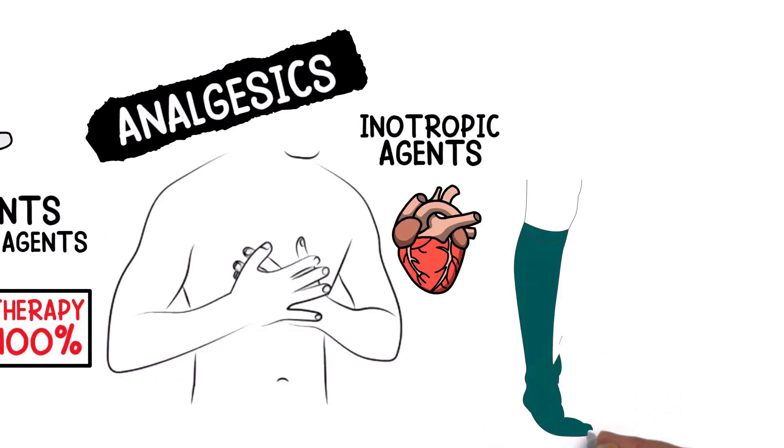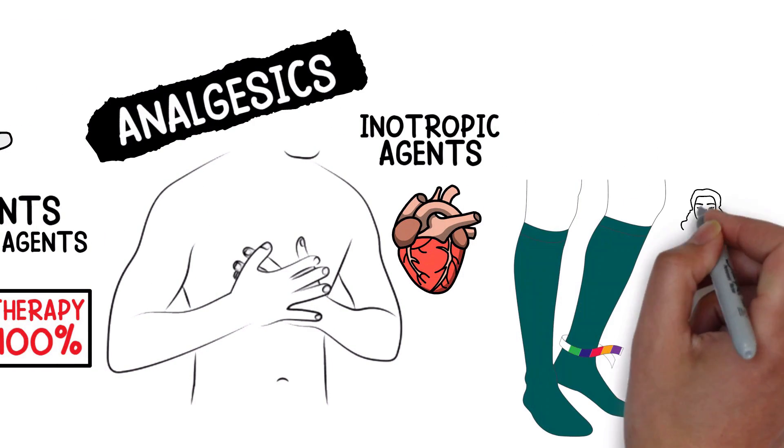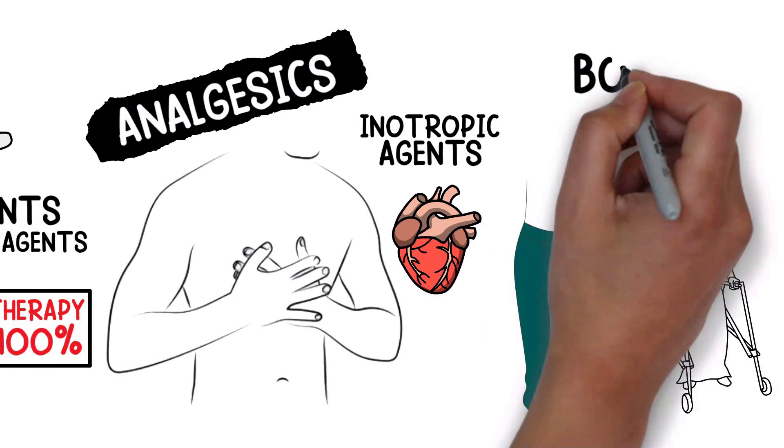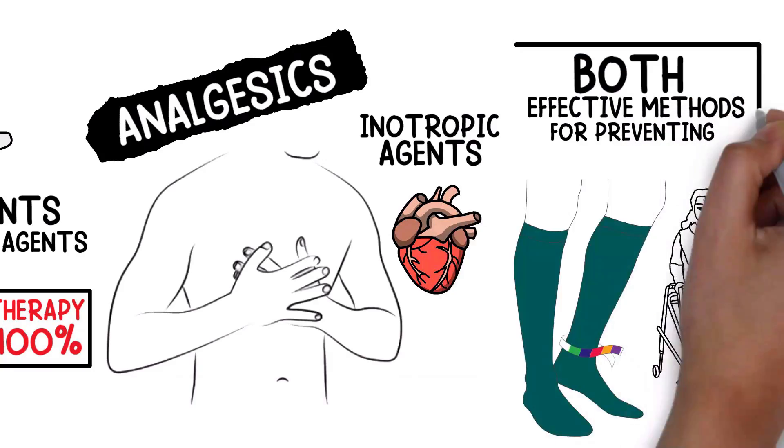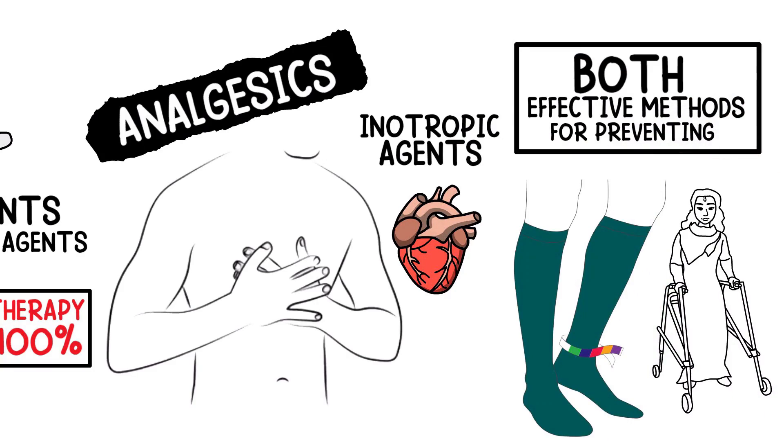Anti-embolism compression stockings and early ambulation are both effective methods for preventing a pulmonary embolism from occurring.